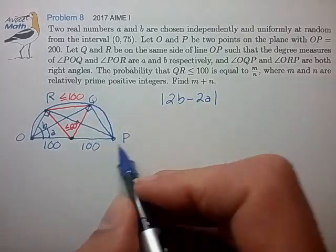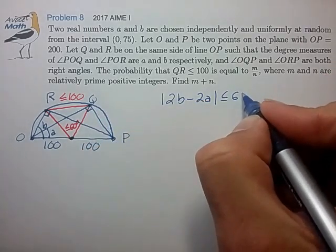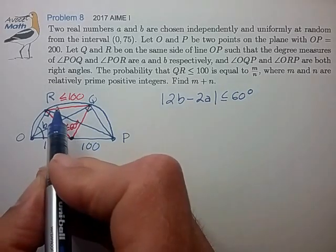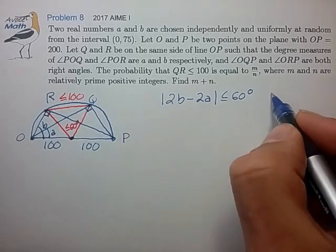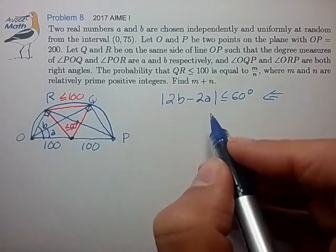has to be less than 60 degrees in order for chord RQ to be less than length 100. So this is the condition that we're going to try to solve.